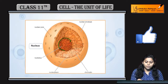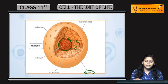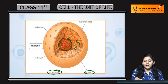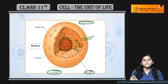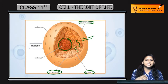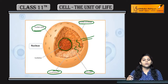Center mein kya hai? Nucleolus hai. Yeh jo thread-like structures hain, these are chromatin. Yeh sab nucleoplasm mein embedded hai. And nuclear envelope present hai — jo inner aur outer membrane se banti hai. Jo inner aur outer membrane hai, vo kisi kisi jagah pe fuse karke nuclear pores banaate hain.